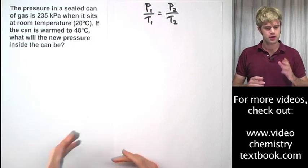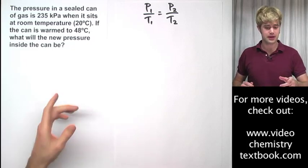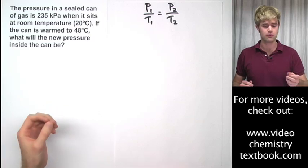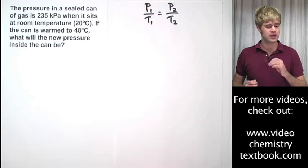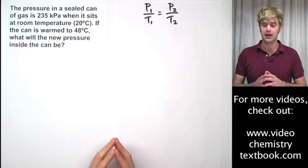Here's a practice problem. The pressure in a sealed can of gas is 235 kilopascals when it sits at room temperature, 20 degrees Celsius. If the can is warm to 48 degrees Celsius, what will the new pressure inside the can be?